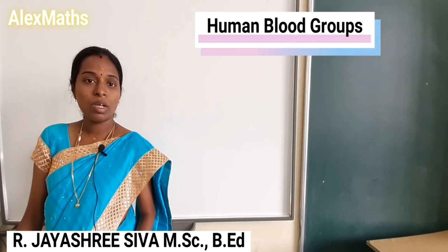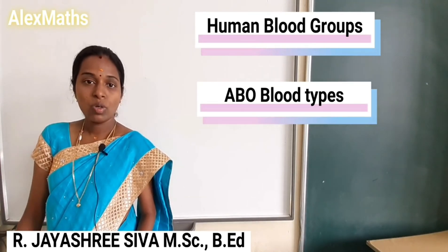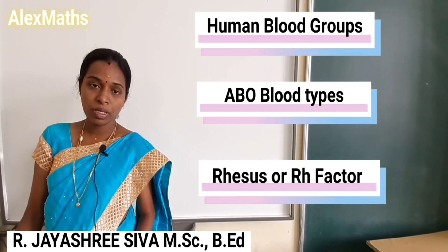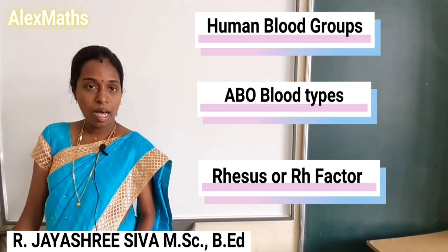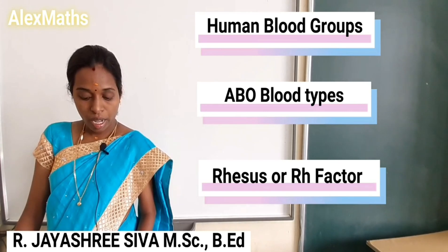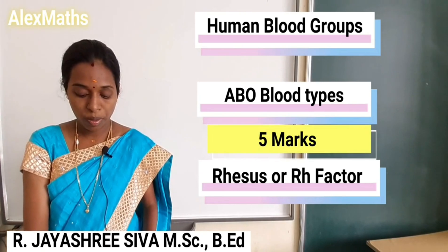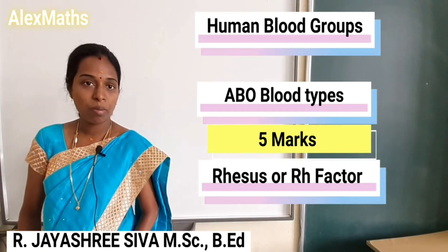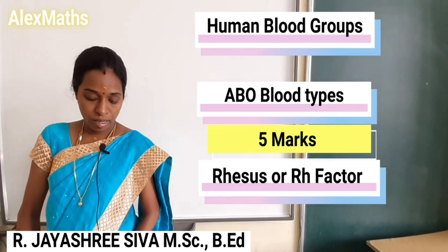The human blood group is known as the ABO type of blood group — A group, B, and O group. That also includes the Rh factor. The Rh factor determines whether the blood group is positive or negative, denoted by the Rh factor. ABO blood group is important as an example of multiple alleles. You can address this question for 5 marks: explain about the ABO blood group, which is an example for multiple alleles.